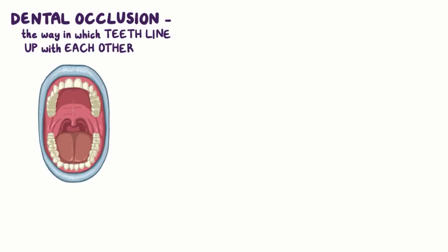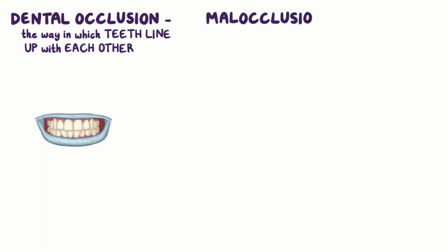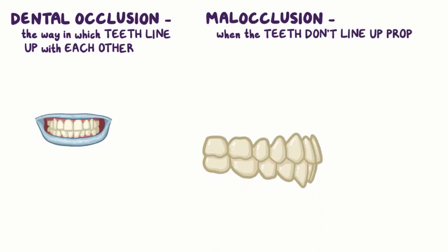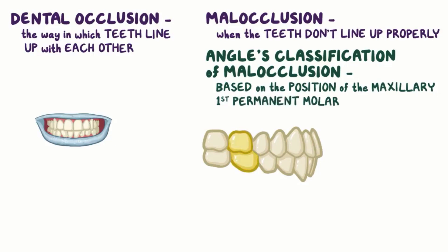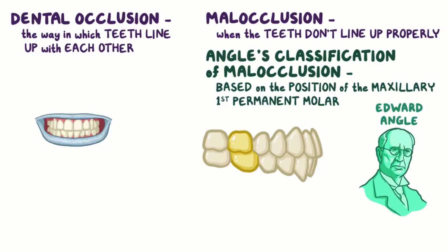Dental occlusion refers to the way in which teeth line up with each other as the jaw goes from open to closed. So malocclusion is when the teeth don't line up properly, and Angle's classification of malocclusion is a system used to categorize that. The system bases everything on the position of the maxillary first permanent molar. It was designed this way because its creator, Edward Angle, believed that the maxillary first molar reliably stayed where it was after eruption while the other teeth tended to have a bit more movement. In people who don't have maxillary first molars, he based the system on the location of the canines instead.